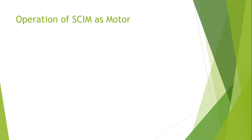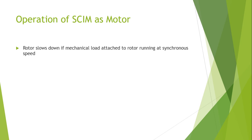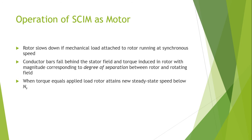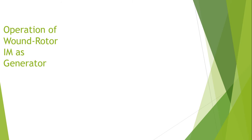Now I will discuss the operation of the squirrel cage induction machine as a motor. If a mechanical load is attached to the rotor running at synchronous speed, the rotor will slow down. The conductor bars fall behind the stator field, and torque is induced with a magnitude corresponding to the degree of separation. When the torque equals the applied load, the rotor attains a new steady speed below the synchronous speed.